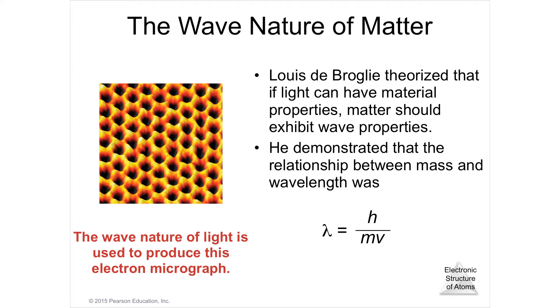His formula is lambda equals h over mv. Lambda is wavelength, a wave property. Planck's constant h over mv, where mv is momentum, a particle property because you can talk about momentum of trucks and bullets. If you throw a baseball, it does have a wave property in a very small way, but compared to its mass, it's so tiny that it would be inconsequential.